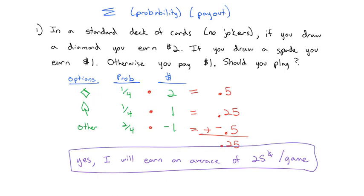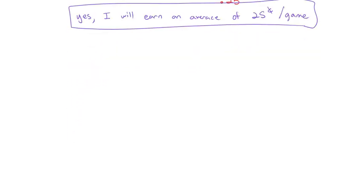The expected value is what you expect to earn, on average, over time. Now, while it's very useful to look at applications in gambling, such as this game where you make $0.25 a game, or if you look at roulette. Turns out that you lose an average of $0.04 per game of roulette. It's interesting to look at these. Where expected value is probably used the most often, though, is by businesses.